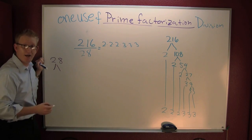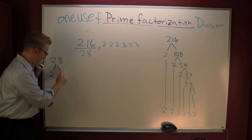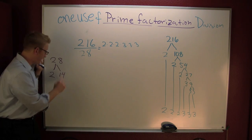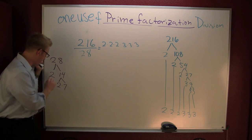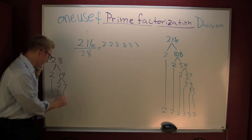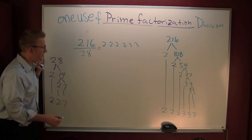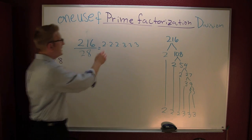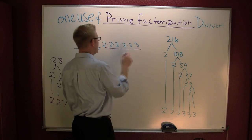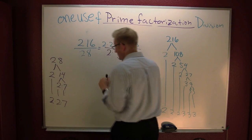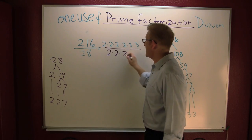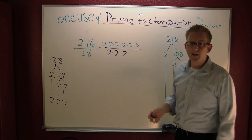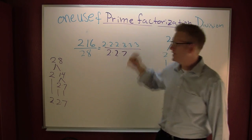Now for 28 — we see it's even, so we start with 2. This is 2 times 14, and then further, 2 times 7. Now I have it all broken down to primes. So 28 equals 2 times 2 times 7.